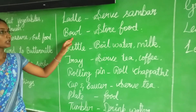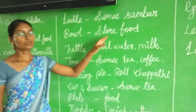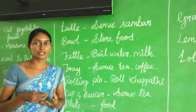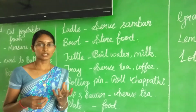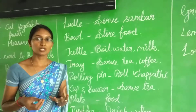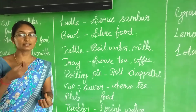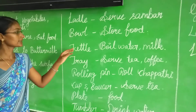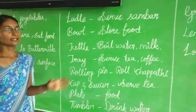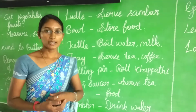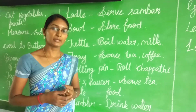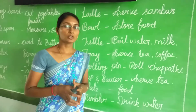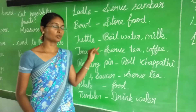Next, bowl. It is used to store food and eat sambar. Bowl means it is used to store food and sambar. Next, kettle. Kettle is used to boil water and milk. It is used to heat liquids. Now kettle is commonly used.